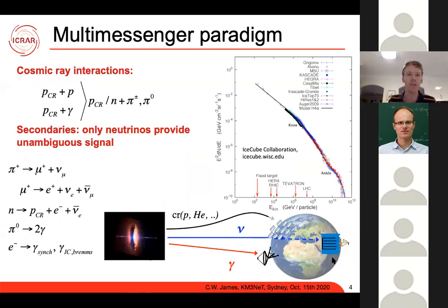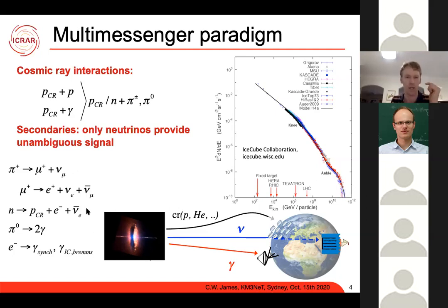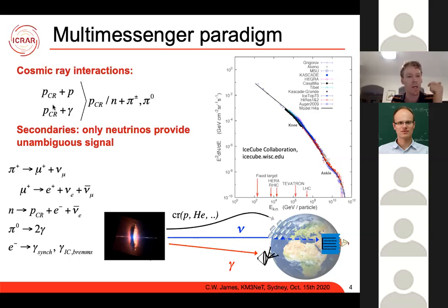One of the original motivations for looking at astrophysical neutrinos comes from the multi-messenger paradigm. We know the universe is full of protons and photons, which can interact to produce pions. Pions decay to give muons and muon neutrinos; muons decay to give electrons and electron neutrinos; neutrons decay to also give neutrinos. So we see cosmic rays and we expect neutrinos. Pi-zeros decay to gamma rays, and electrons from these processes emit synchrotron, inverse Compton, and bremsstrahlung radiation — all probing high-energy hadronic accelerators.